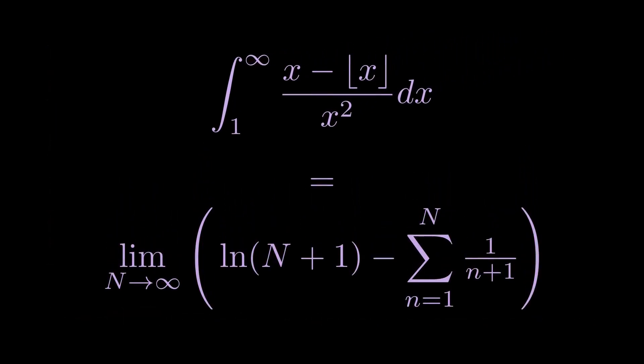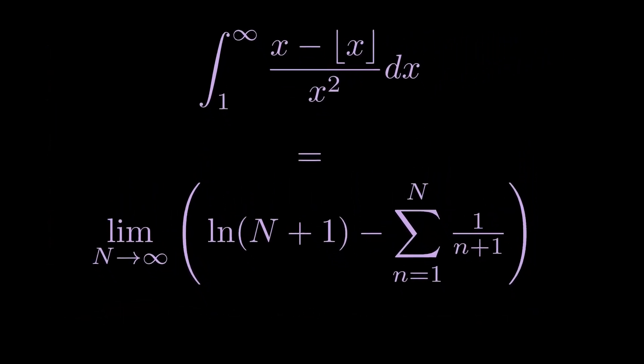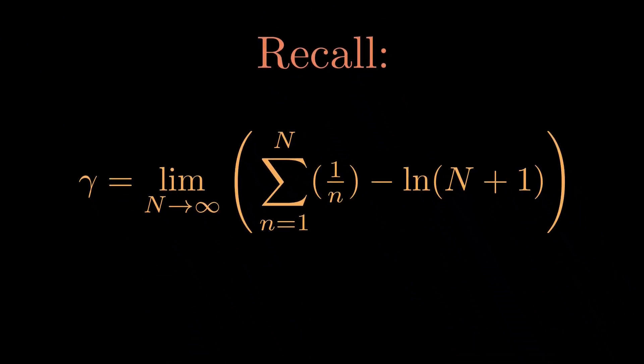Now let's remind ourselves of the Euler-Mascheroni constant, gamma, the focus of the last few videos. We have learned that gamma is equal to the limit as n goes to infinity of the sum from n equals 1 to n of 1 over n minus the natural log of n plus 1.